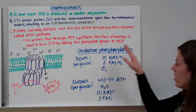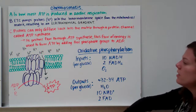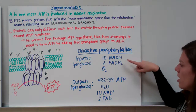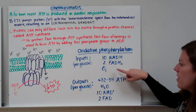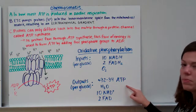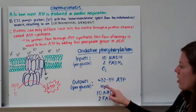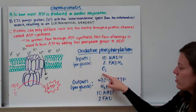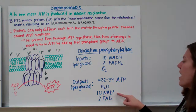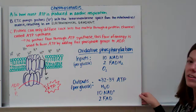Looking at the overall scheme of oxidative phosphorylation, our inputs per glucose are ten NADs and two FADH2s passing through the electron transport chain, plus oxygen as the terminal electron acceptor. Our outputs are 32 to 34 ATP — this is an estimation, not an exact number — water as a waste product, and the oxidized forms NAD and FAD. That's the end of aerobic cellular respiration.